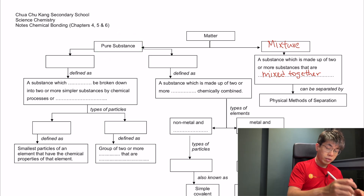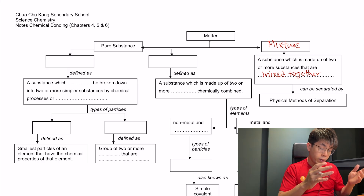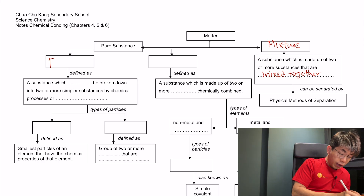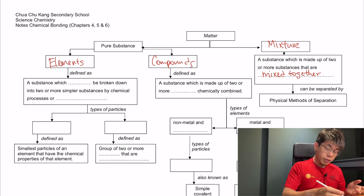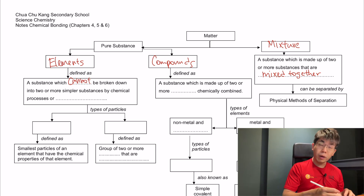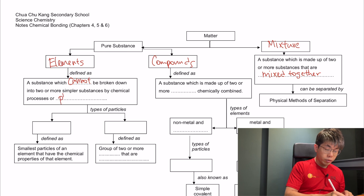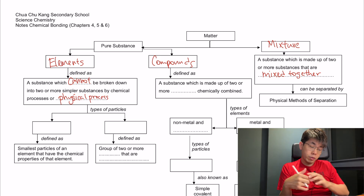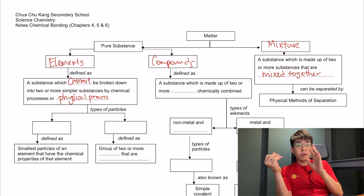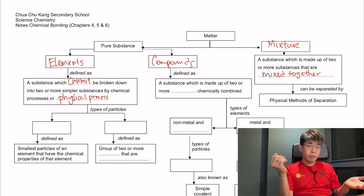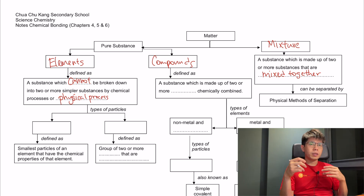Pure substances can be separated into two different categories: one is elements and the other is compounds. An element is something that cannot be broken down into two or more simpler substances by any chemical or physical process. Elements are those that we can find on the periodic table — if it can be found on the periodic table, it's an element.